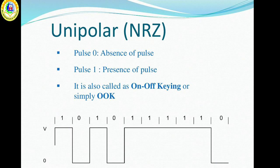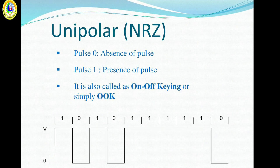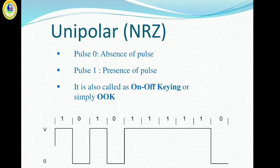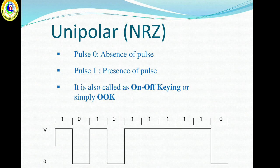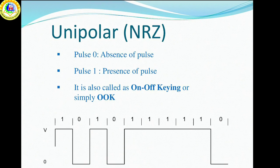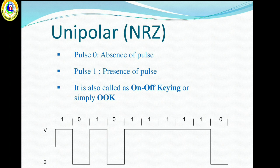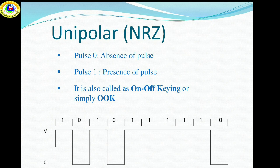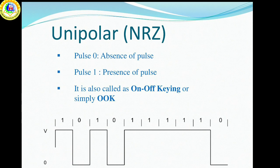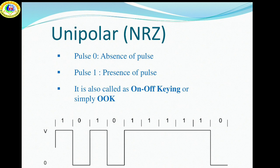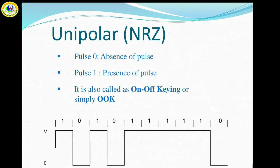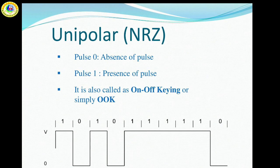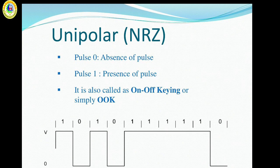It is also called as ON-OFF keying or OOK. The presence of pulse represents a 1 and the absence of pulse represents a 0. First go to the unipolar non-return to zero. In this type of signaling, a high in data is represented by a positive pulse called mark which has a duration T equal to the symbol bit duration, and a low in data input has no pulse.